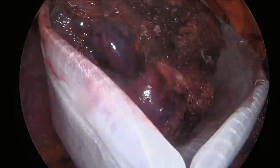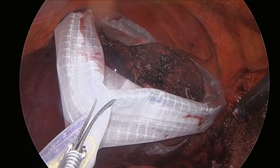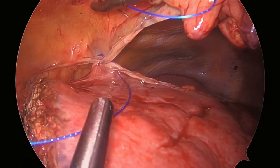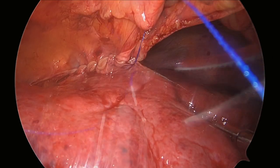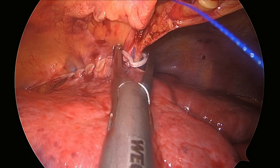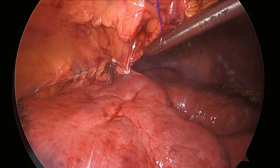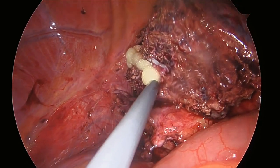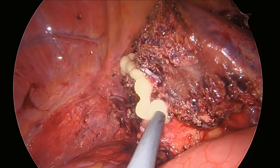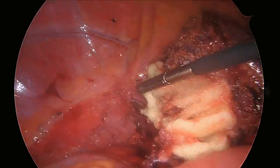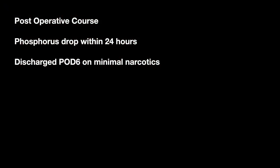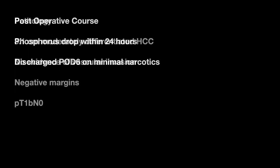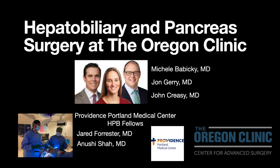The specimen is then placed in an endo-catch bag and extracted through a fan-and-steel incision. There was no Pringle required and blood loss was less than 200 cc's. The falciform ligament was then re-approximated with a V-lock suture to prevent torsion on the outflow vessels. The cut surface was inspected for bile leaks and there were none. Flow seal was applied to the raw cut surface area and no drain was placed. The patient had a relatively smooth post-operative course with great liver function, discharged on post-operative day 6 on minimal oral narcotics. Final pathology returned with a 3.1 cm HCC with negative margins. Thanks for tuning in for another minimally invasive hepatectomy performed here at the Oregon Clinic.